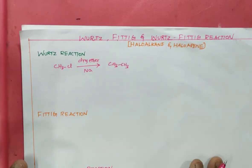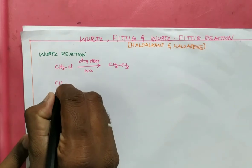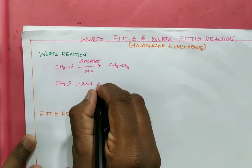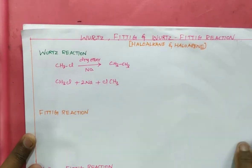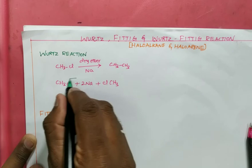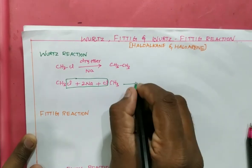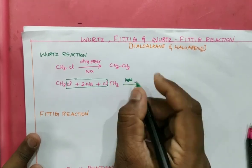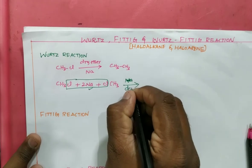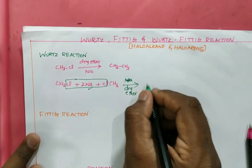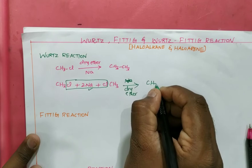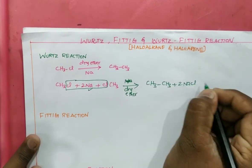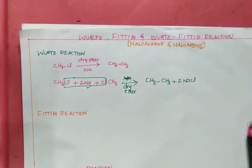So let us see: CH3Cl reacts with 2Na (metallic sodium) along with another CH3Cl. 2NaCl will be eliminated, and in the presence of metallic sodium and dry ether, we get the product CH3CH3 along with 2NaCl.